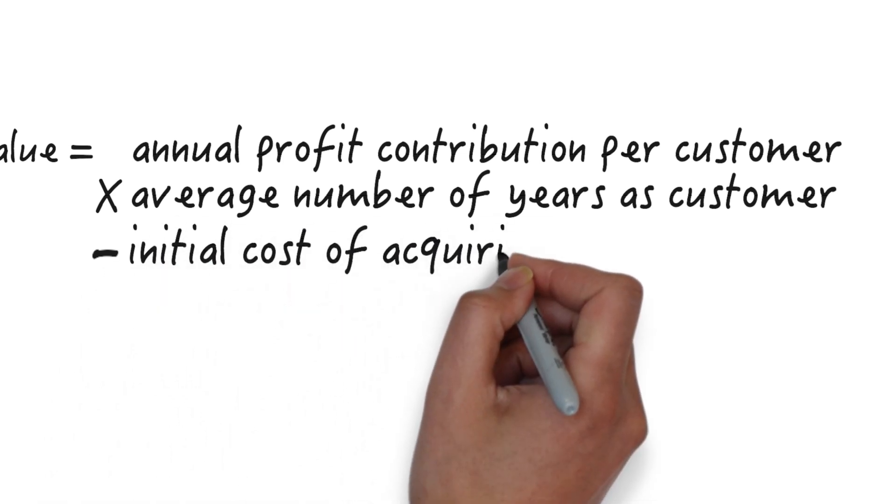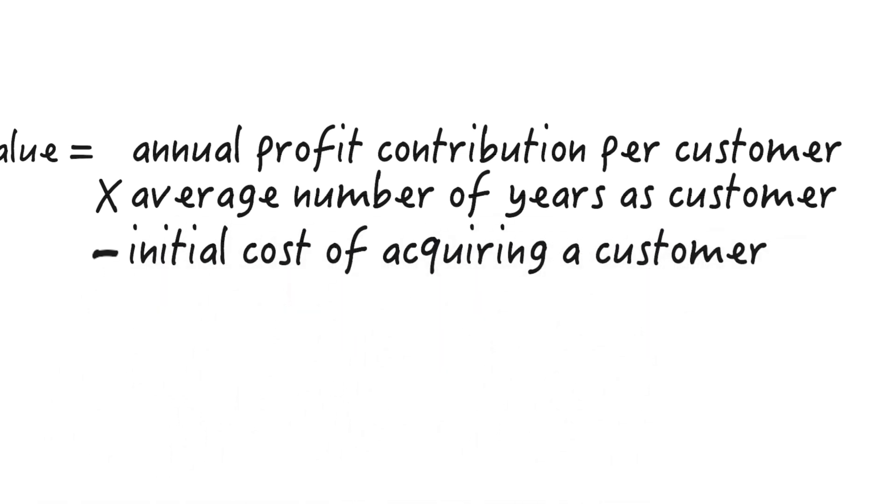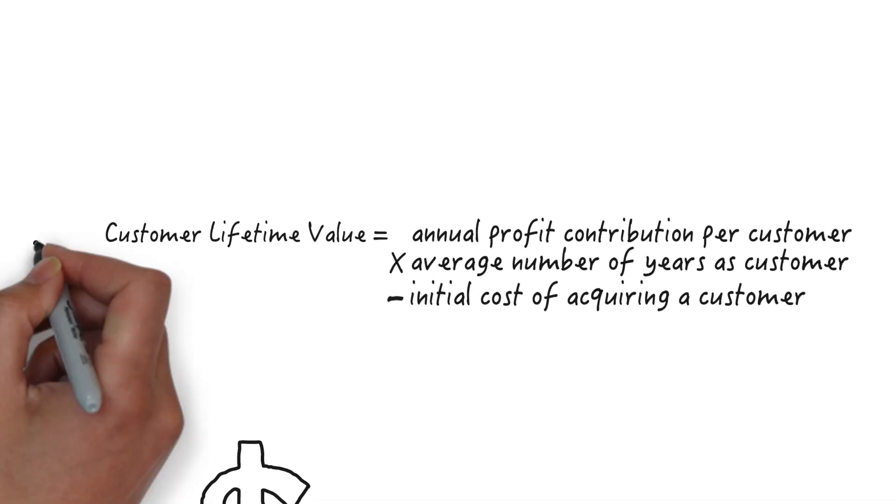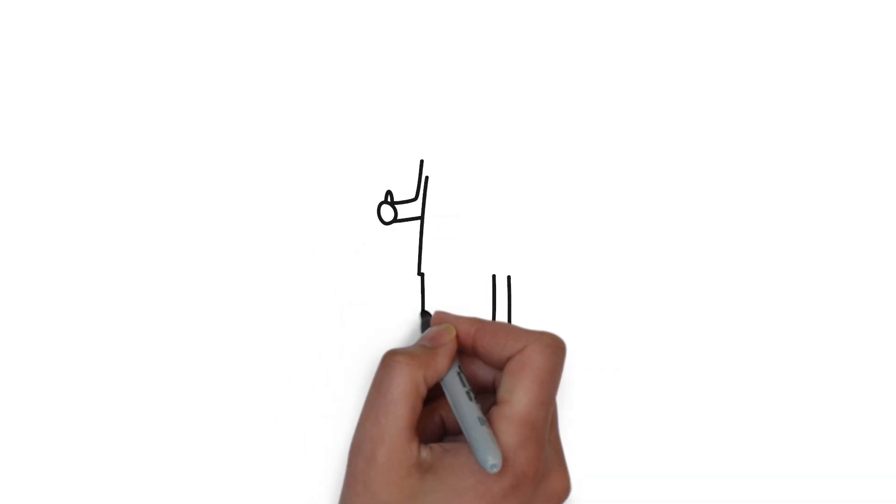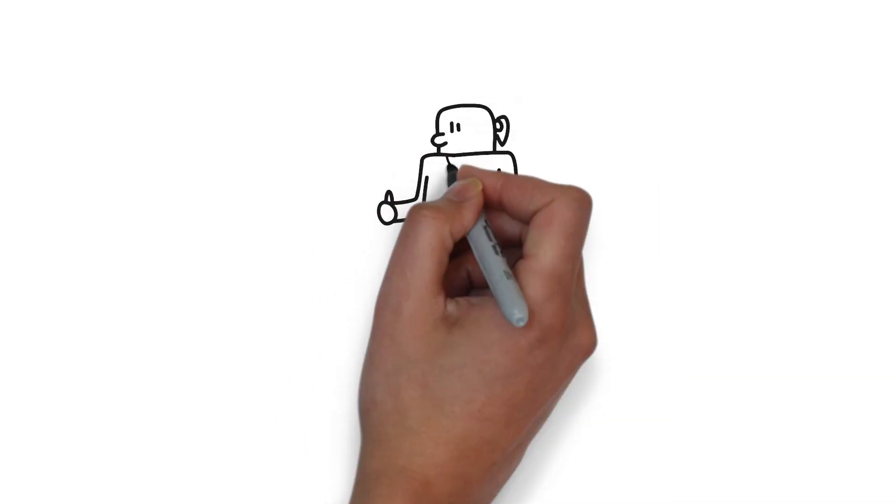Now profit contribution is the margin, or the amount of the sale that is not eaten up by variable costs. Other CLV formulas account for fixed costs and the time value of money, but we're going to start slow.